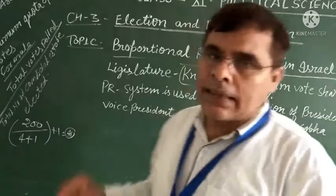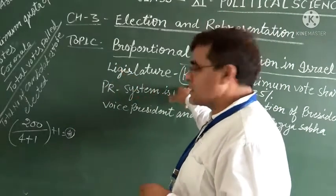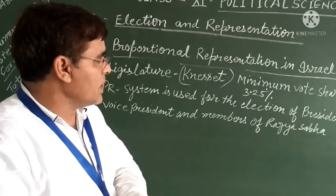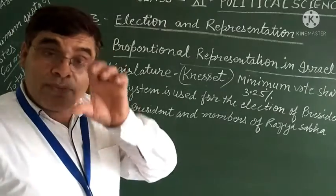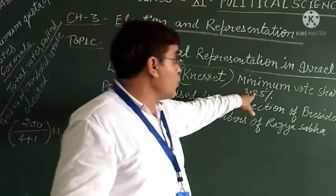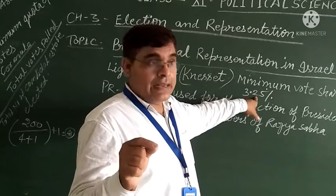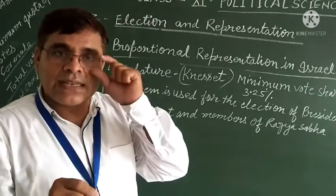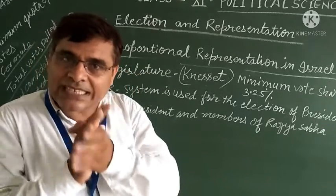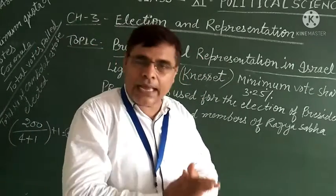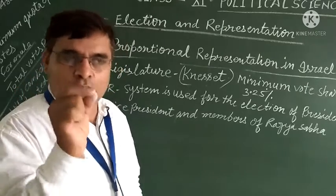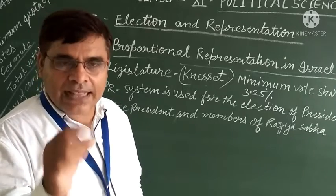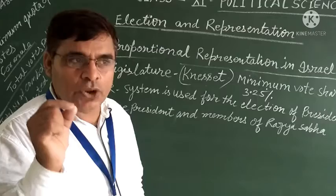In Israel, the legislature — that means the parliament — when the system of election is applied, the political party which gets a minimum 3.25 percent vote share is eligible to get seats in the parliament. Otherwise, if any political party gets less than 2.2 percent of vote share, that party is not eligible to secure their seat in the Israel parliament.